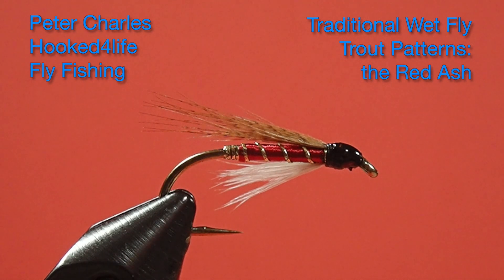Hi, Peter Charles here of Hooked to Fly Fly Fishing, and today we're going to tie the Red Ash. Now this is an interesting pattern, including red and brown with some gold tinsel. And it has some interesting characteristics to it. I think it will fish very well. So let's go on with the fly and take a look at materials.